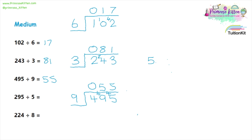295 divided by five. Five goes on the outside. How many fives will fit into two? Zero — so we carry the two over. How many fives will fit into twenty-nine? Five fives go into twenty-five, and then we have four left over, which we carry over. Then: how many fives go into forty-five? And that is nine.